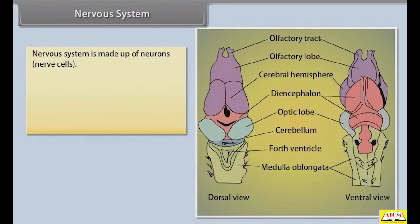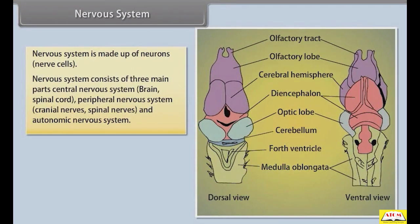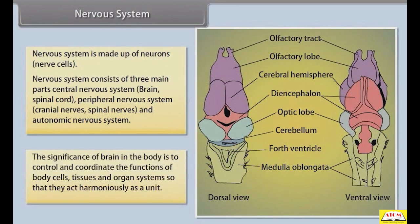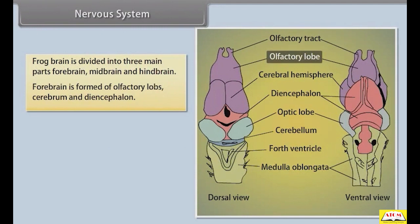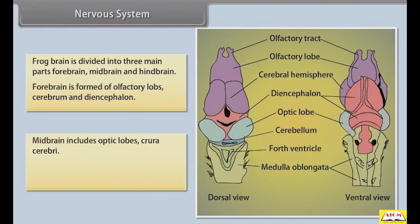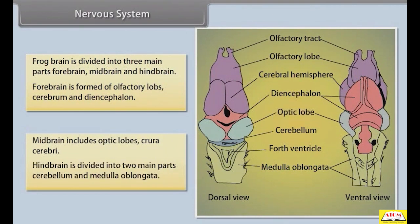The nervous system is made up of neurons and consists of three main parts: central nervous system (brain and spinal cord), peripheral nervous system (cranial and spinal nerves), and autonomic nervous system. The brain controls and coordinates the functions of body cells, tissues, and organ systems so that they act harmoniously as a unit. The frog brain is divided into three main parts: forebrain — olfactory lobes, cerebrum, and diencephalon; midbrain — optic lobes and crura cerebri; and hindbrain — cerebellum and medulla oblongata.